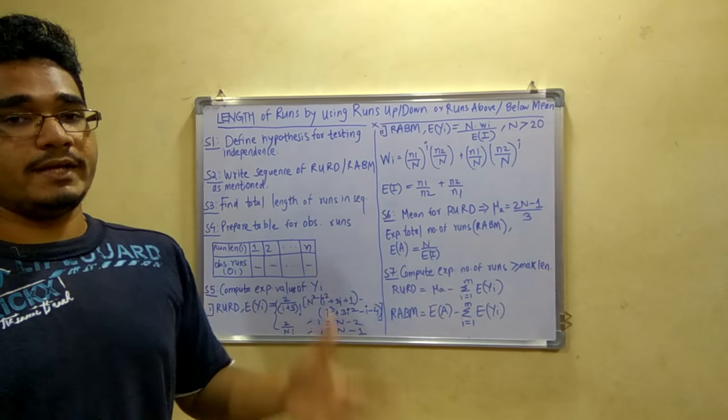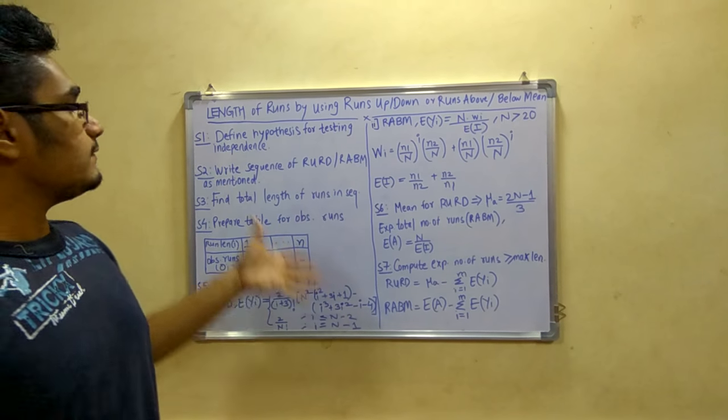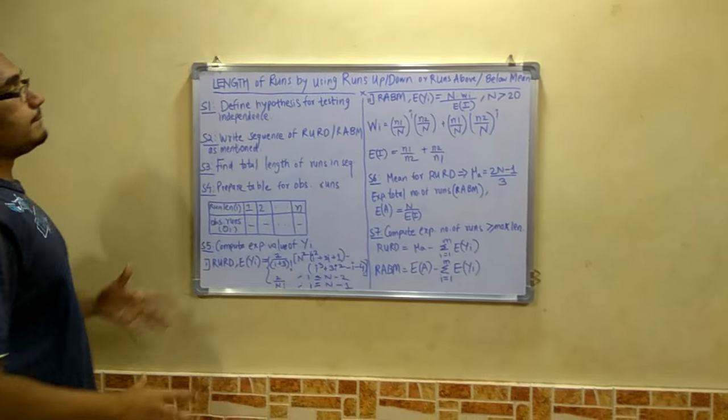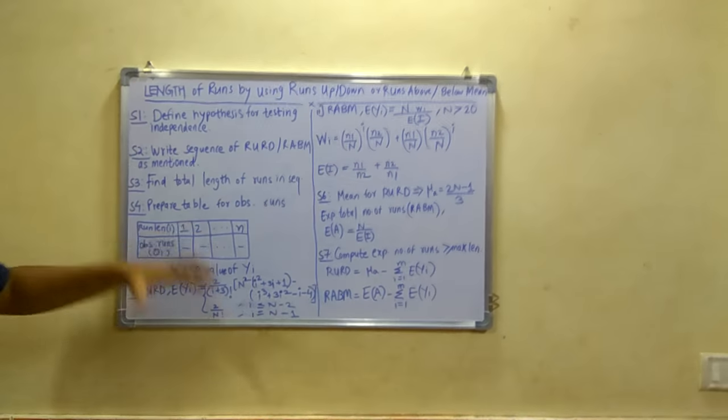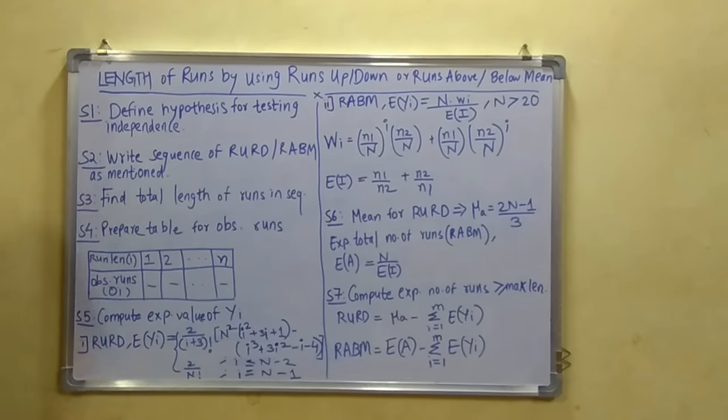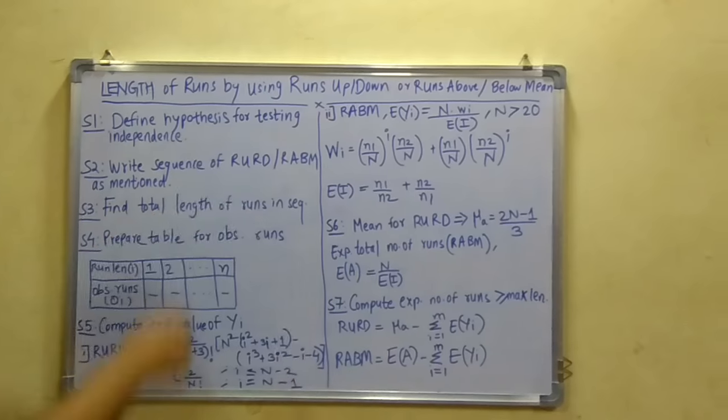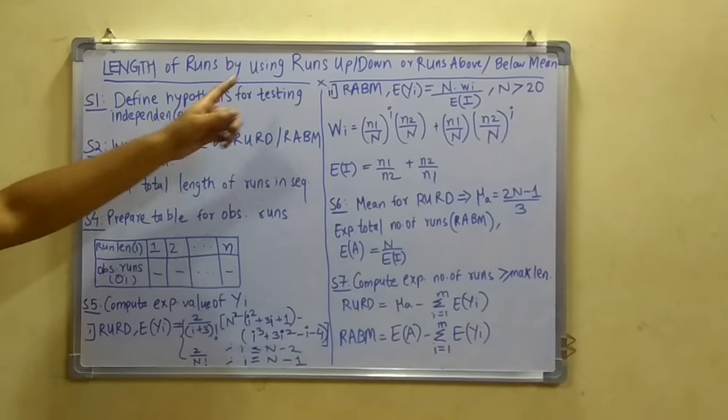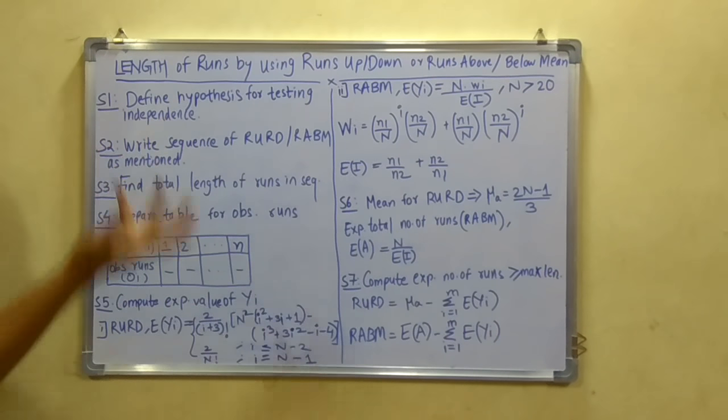So to get started, we will define the first step: define the hypothesis for testing independence. Next we will write the sequence of runs up and down as well as runs above and below the mean as mentioned in the question.